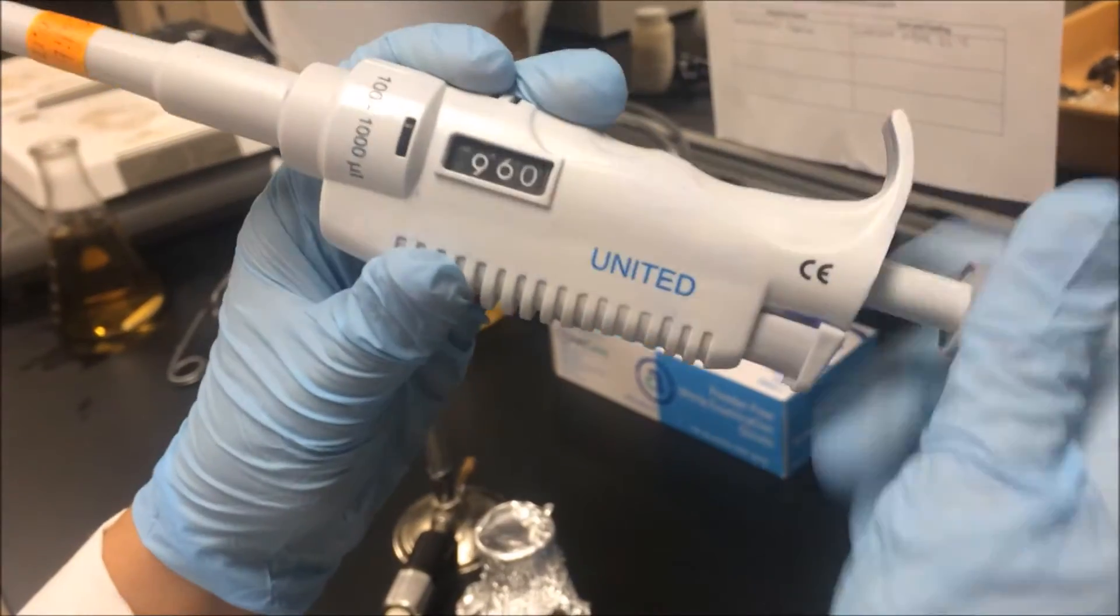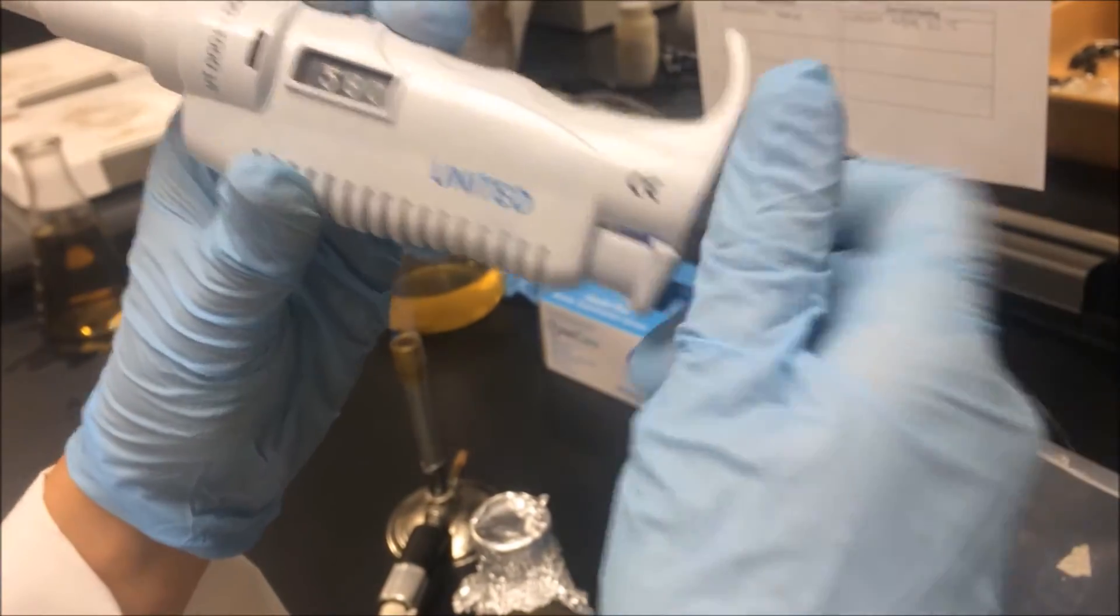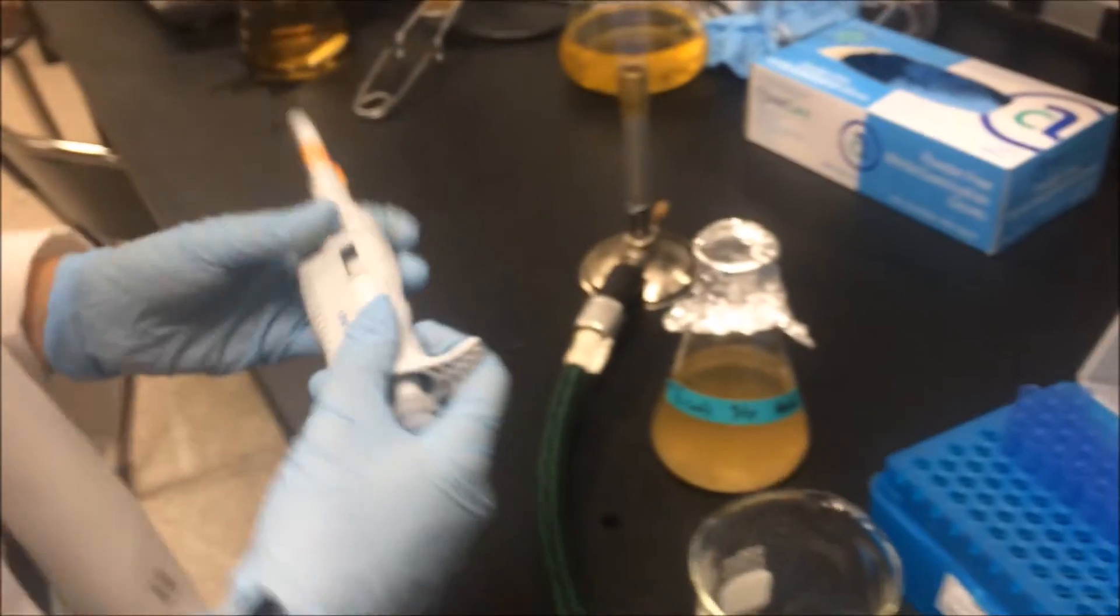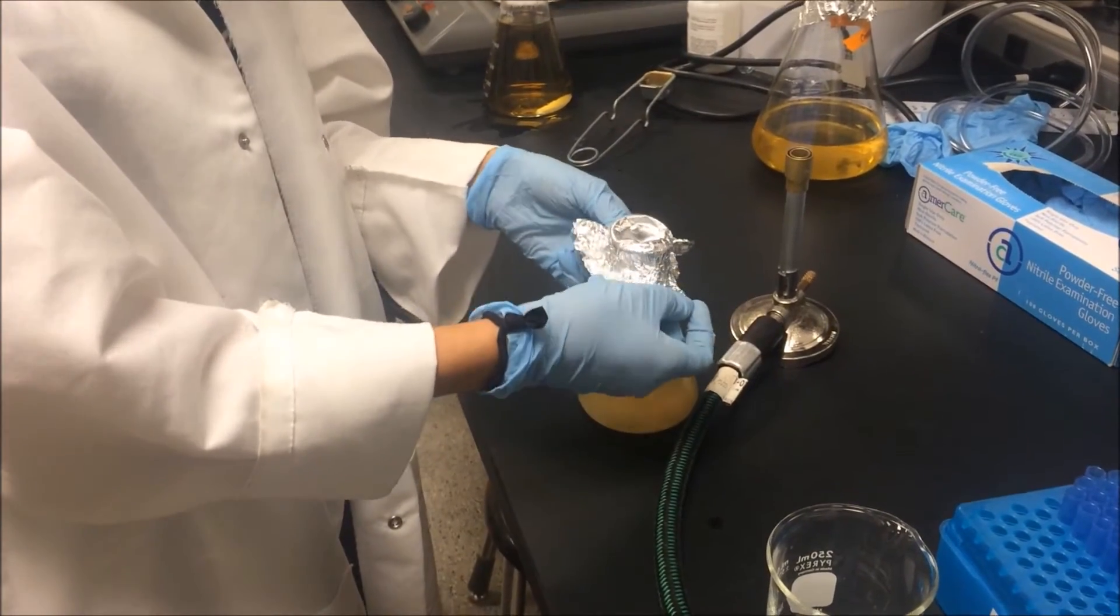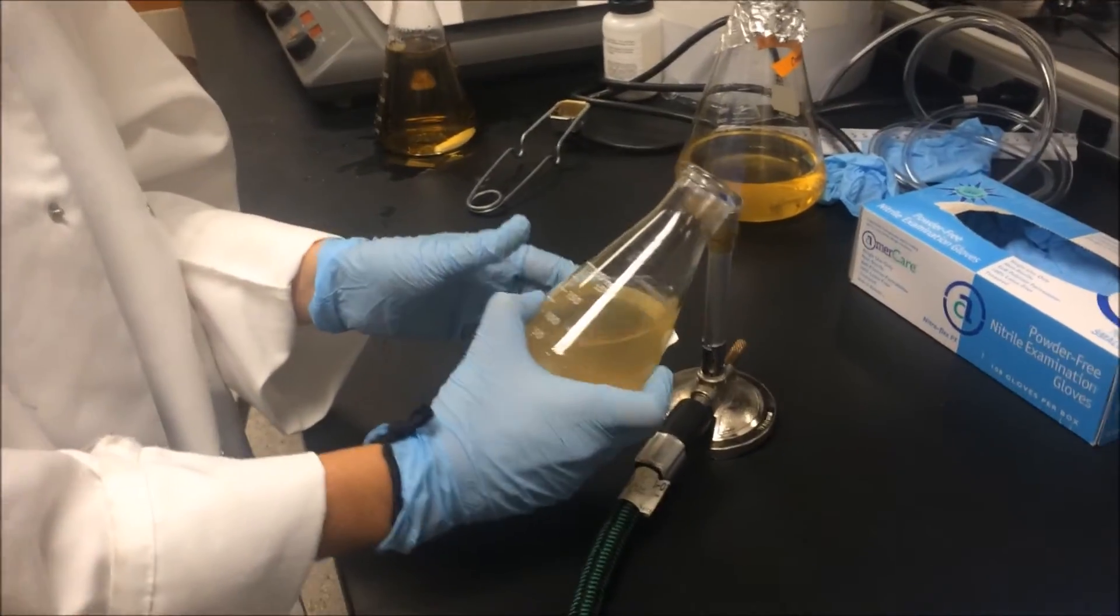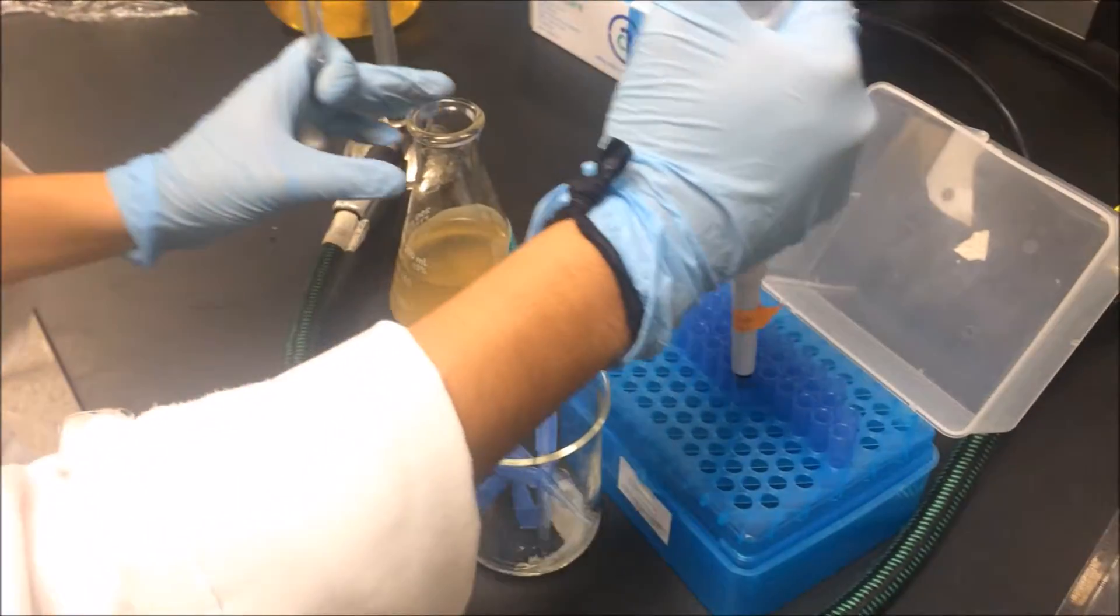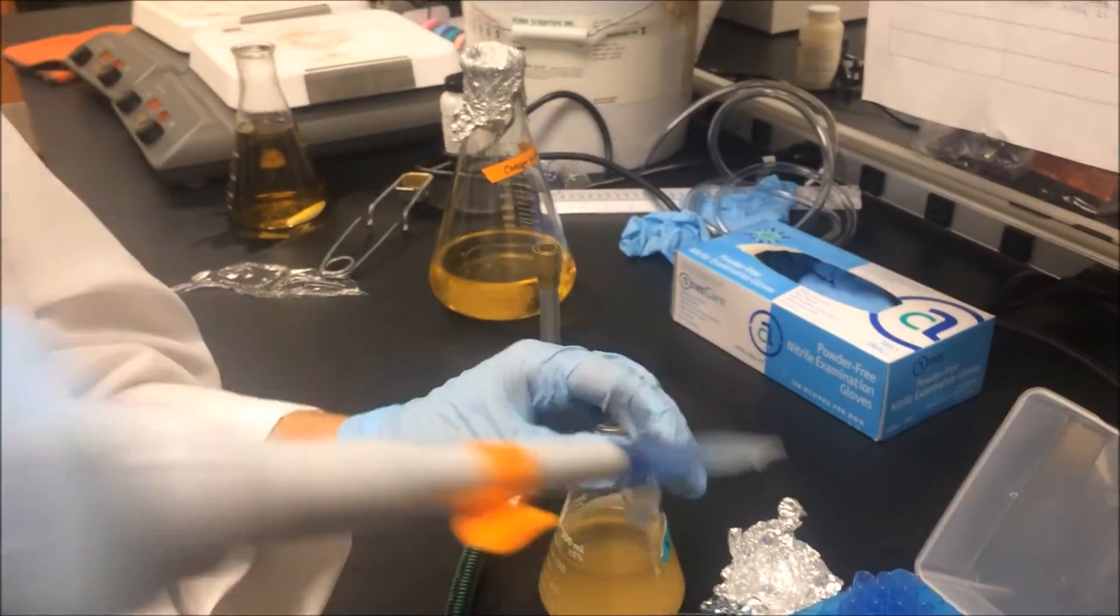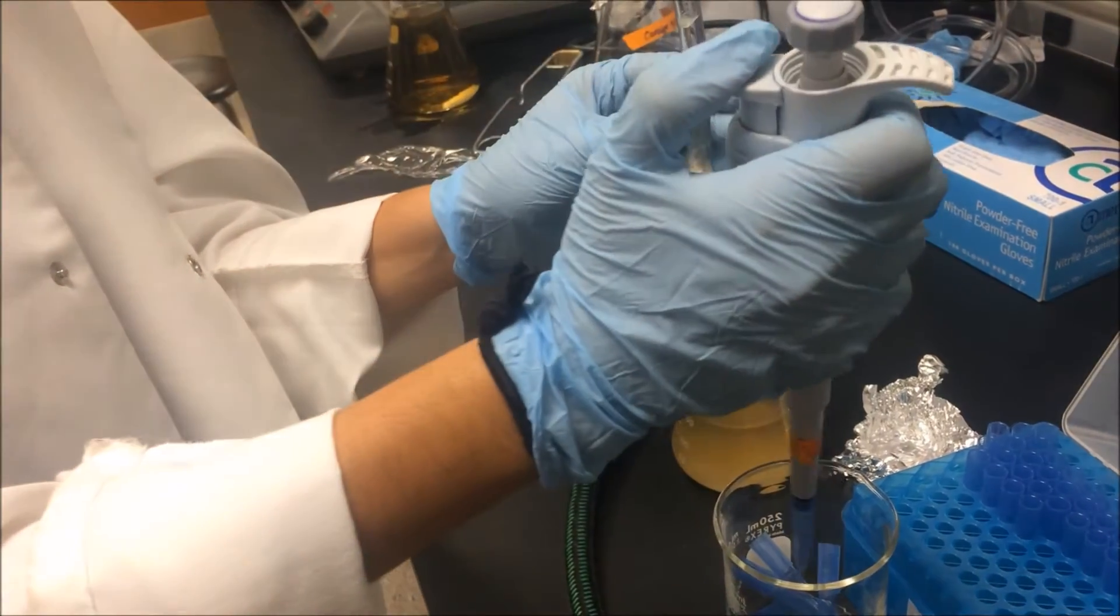Turn to 500. Grab E. coli. Remove lid. Flame. Get new pipet tips. Discard pipet tips.